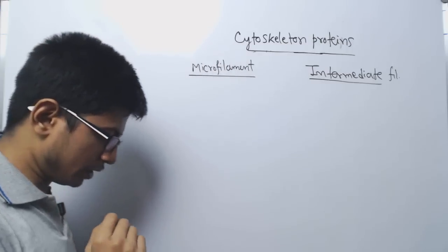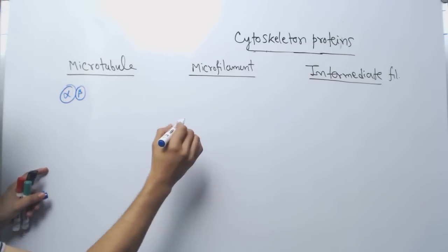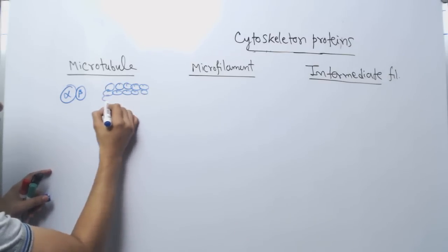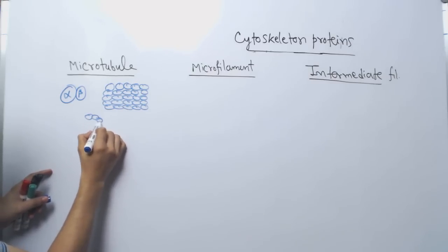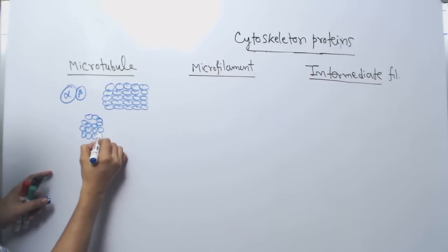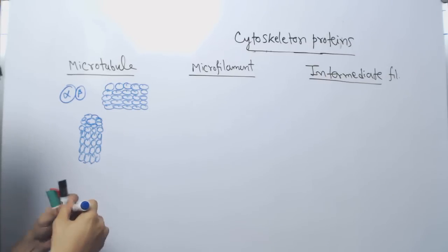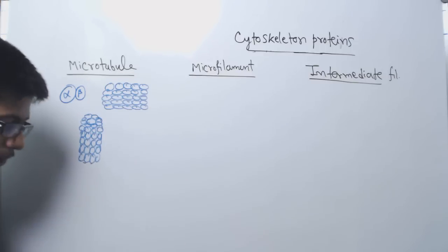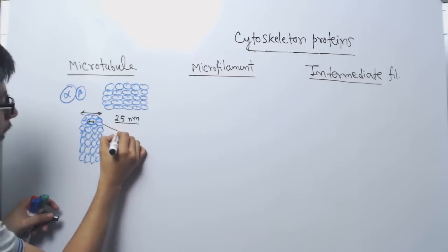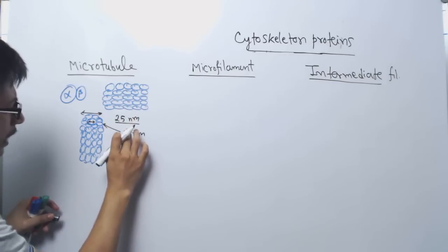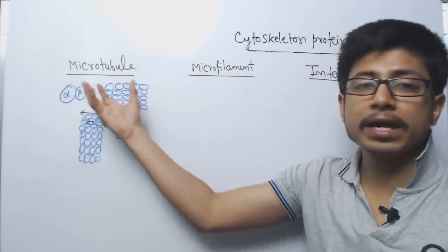Alpha and beta tubulin are the dimers. Many such dimers attach with each other and form a sheet-like structure. Once they form the sheet-like structure, the sheet gets folded into a cylinder-like shape, where you have a lumen in the centre — and that is the microtubule cylinder that is formed. The total diameter of this complete microtubule is 25 nanometres, but the diameter of the lumen is 12 to 15 nanometres. So it is a hollow tube produced by the structural unit of alpha and beta tubulin dimers.